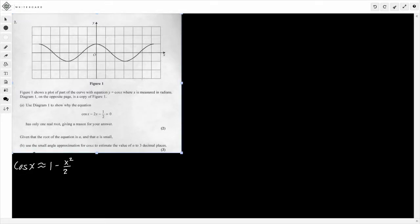Moving on to question 2. Here we have a question with two parts. Part A, we're asked to show, using this diagram here, figure 1, why this equation, cos x minus 2x minus 1 half, only has one real root, and then part B is a small angle approximation for 3 marks.